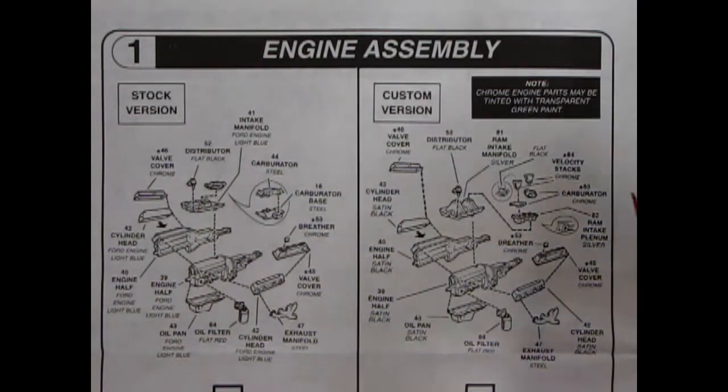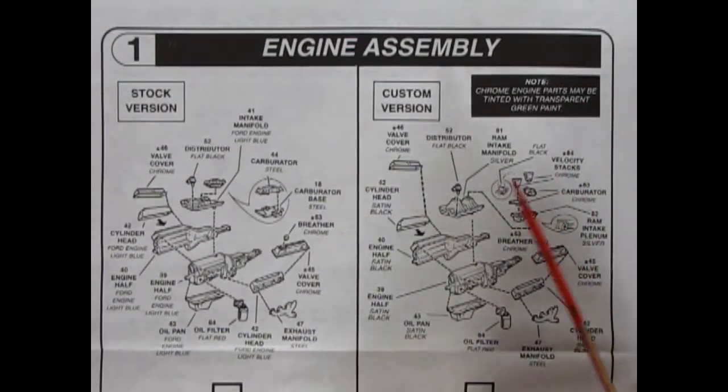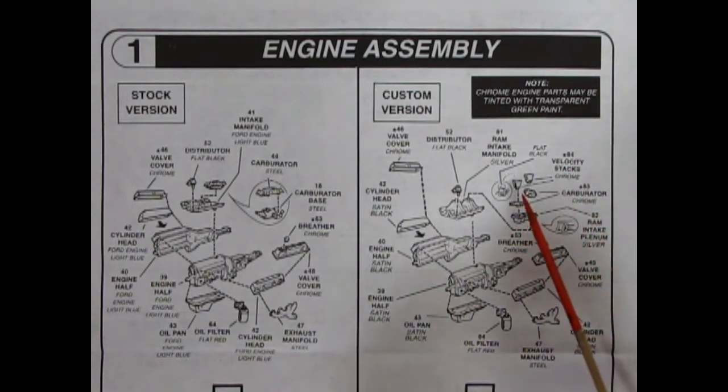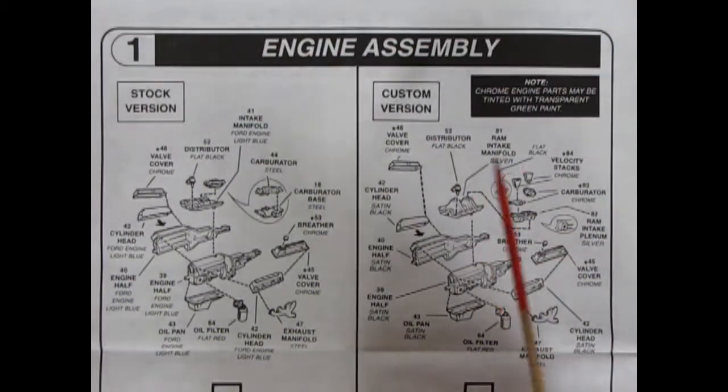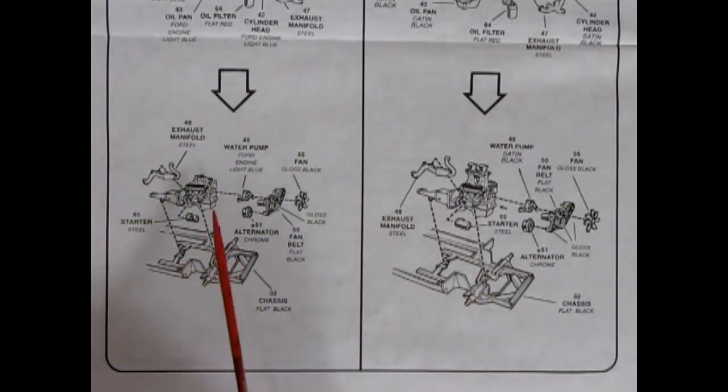We head over to the custom side. It says, note, chrome engine parts may be tinted with transparent green paint. That would be interesting. We've got chrome valve covers. Basically, this is the same engine block as the stock version. Except, you are getting the dual carburetors and the velocity stacks on this high intake ram intake manifold, which is painted silver. Then our distributor pops on there. So, two awesome looking motors. Following the arrows downward. We have our stock engine being dropped into the chassis. Which you're going to paint the chassis flat black. Starter is going on the side. Your fans and alternators, water pump and engine.